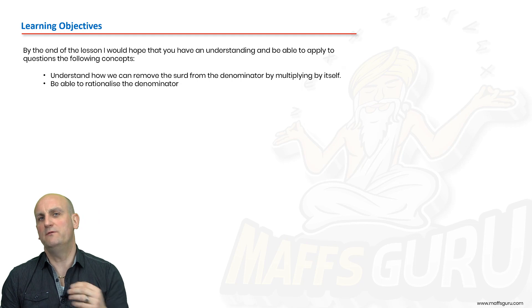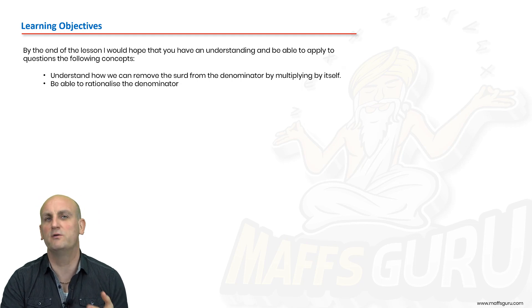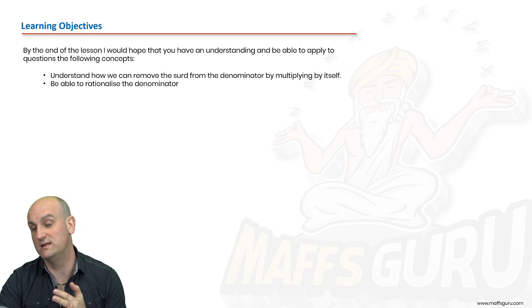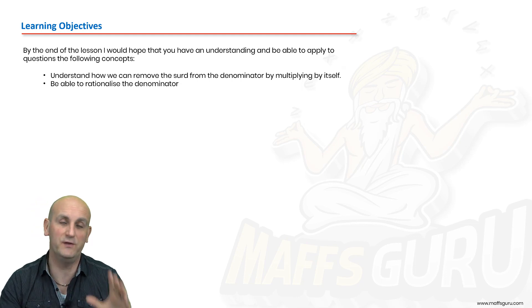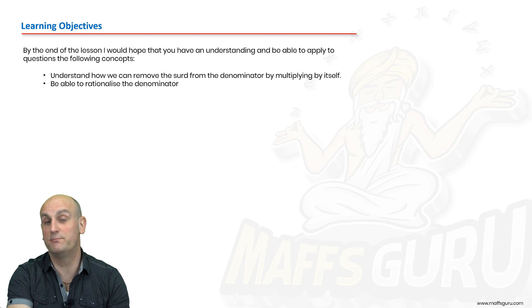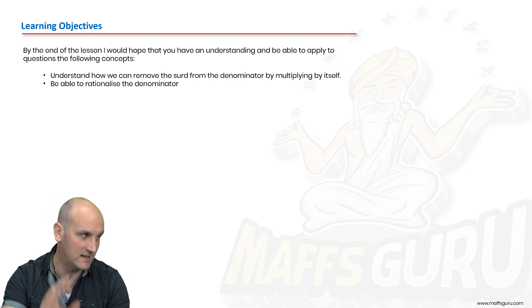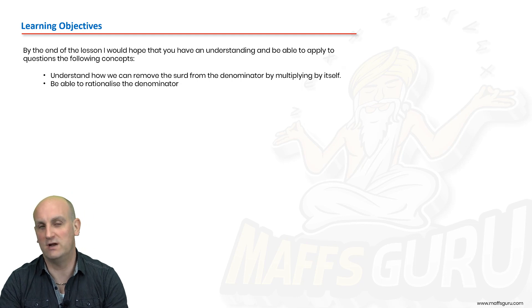We have been dealing with a number of videos so far where we introduced surds, we've added them and subtracted them, we've multiplied and divided them and now we're going to look at this thing called rationalizing. By the end of this video, hopefully we're going to look at seeing why and how we can remove the surd from the denominator by multiplying by itself.